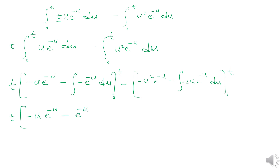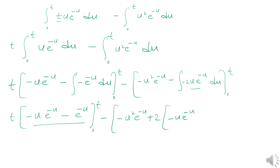We get e to the power negative u with limits from 0 to t, with a negative sign outside. Then u-squared e to the power negative u, plus 2 multiplied by the integral of u e to the power negative u — which we have already found — minus e to the power negative u, with limits from 0 to t.